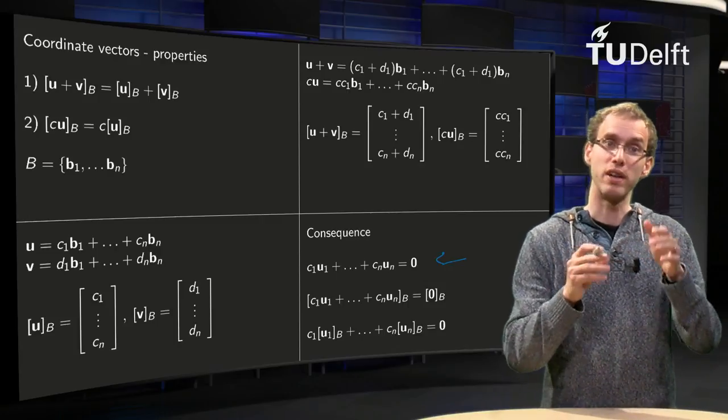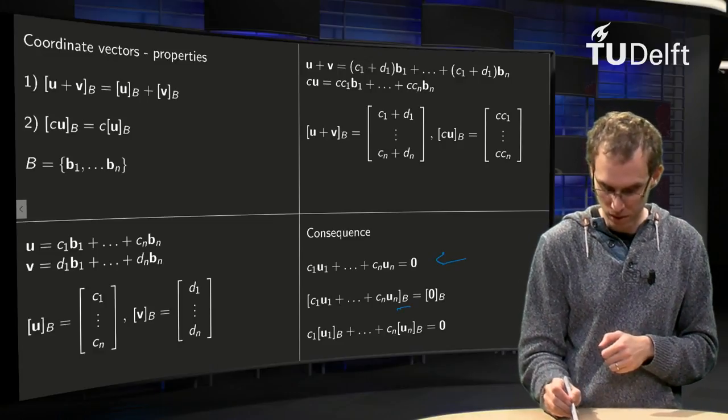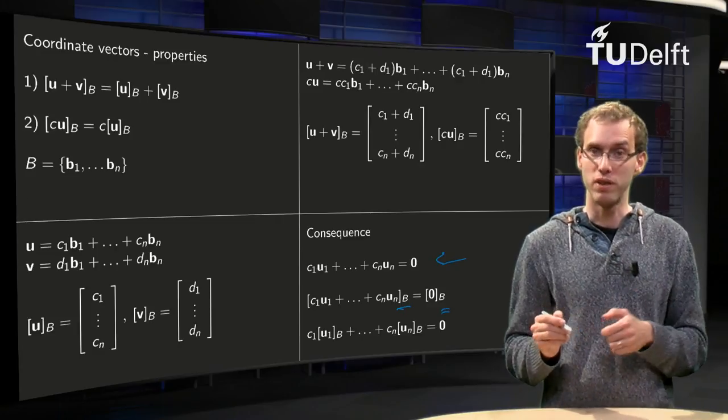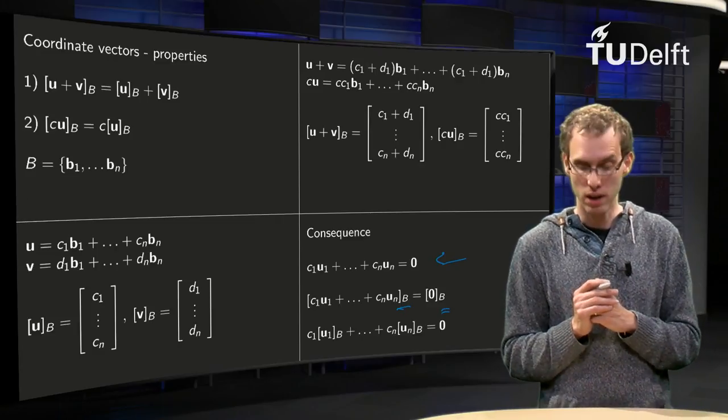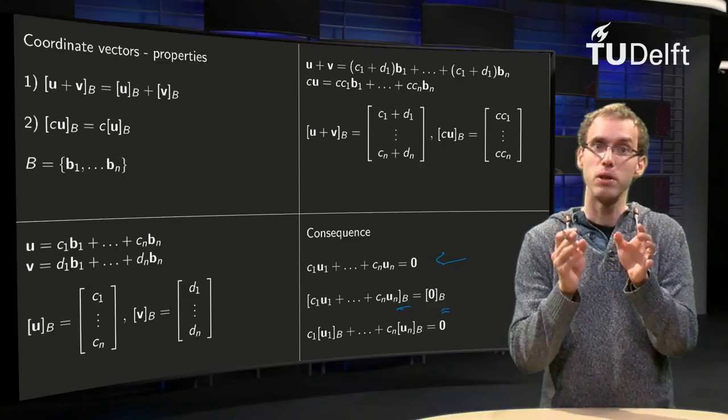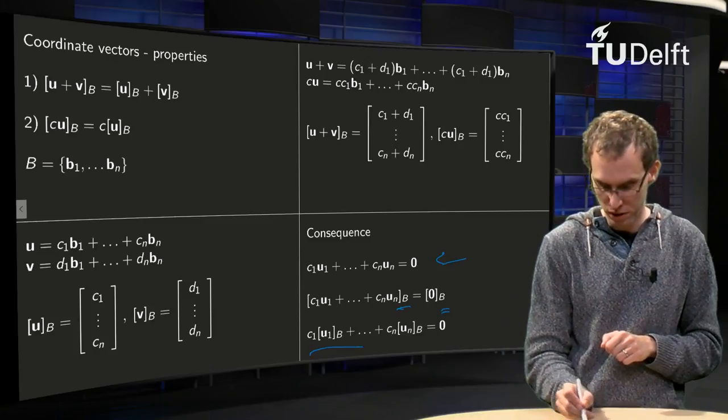Then you take the coordinate vector on the left and the right, step over here, so you take the coordinate vector B here and B over there. Well, what happens? The coordinate vector of a zero vector is just a zero vector, but now in R^n, we have this linearity. You can split up the sum in parts and take the scalars up front, so we get this equation over here.